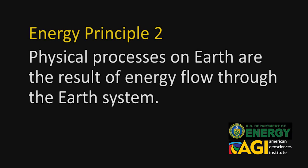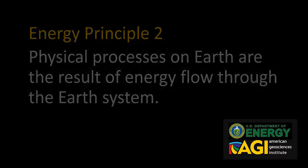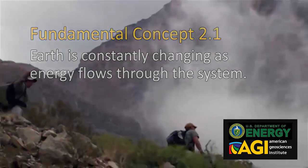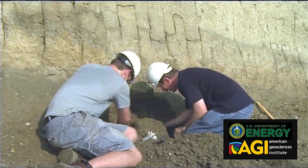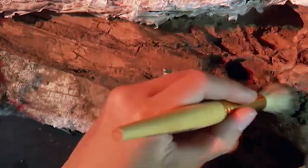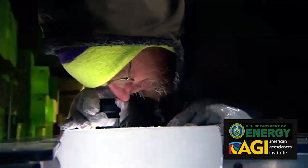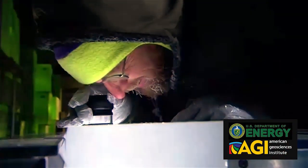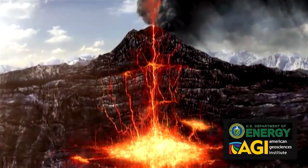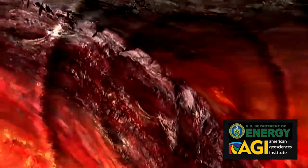This is energy principle two: physical processes on Earth are the result of energy flow through the Earth system. Earth is constantly changing as energy flows through the system. Geologic, fossil, and ice records provide evidence of significant changes throughout Earth's history. These changes are always associated with changes in the flow of energy through the Earth.